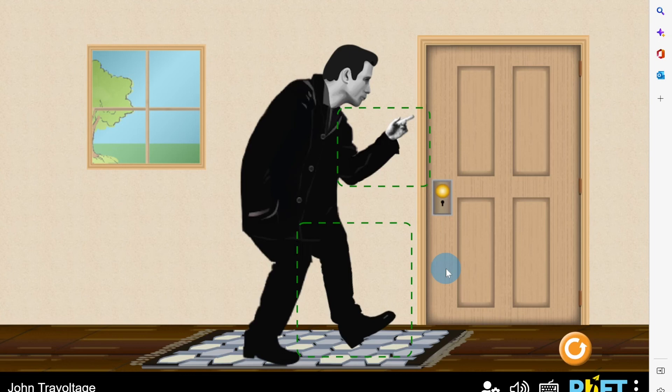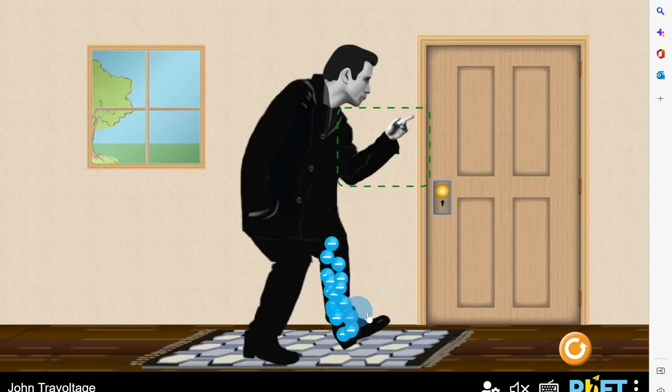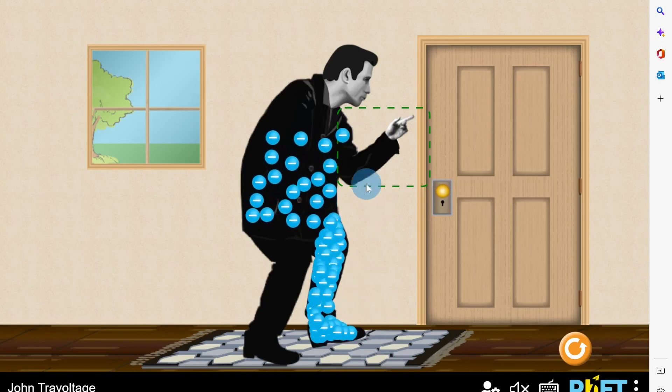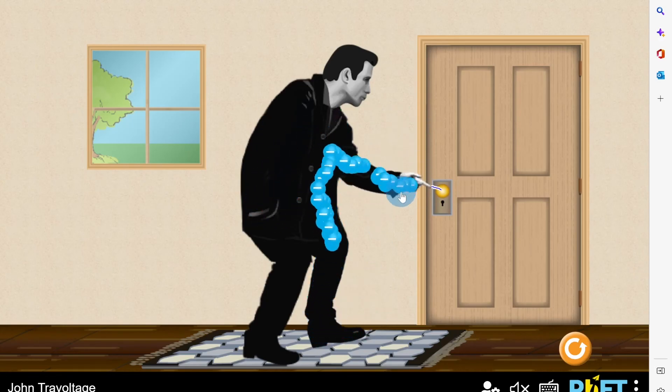Now in the past, you might have given yourself an electric shock if you were wearing socks and you brushed your feet along the carpet and then touched a door handle. This is what John Travolta is demonstrating for us here. So if we brush his foot along the carpet, you'll see he's building up lots of negative charge in his body.